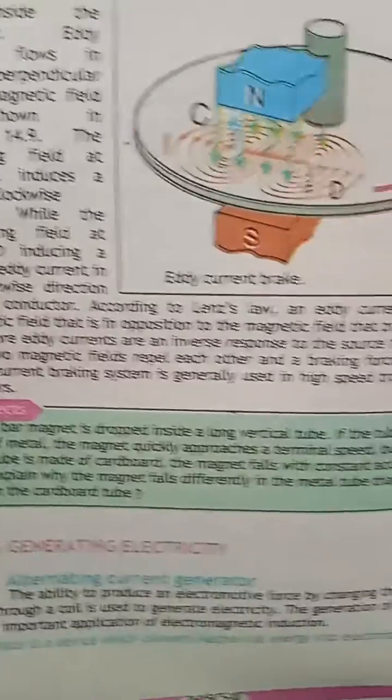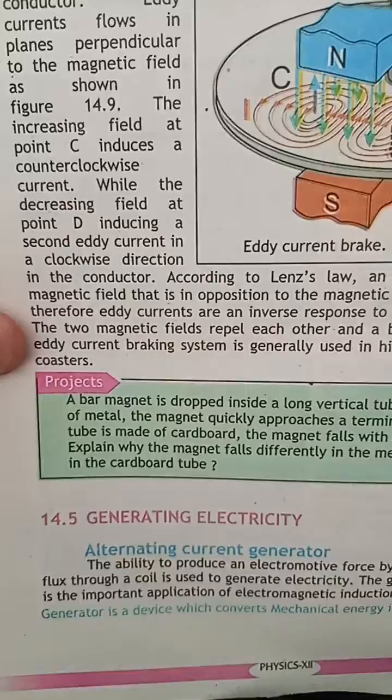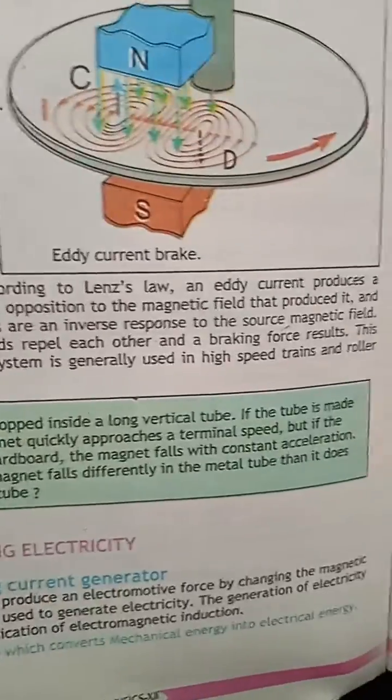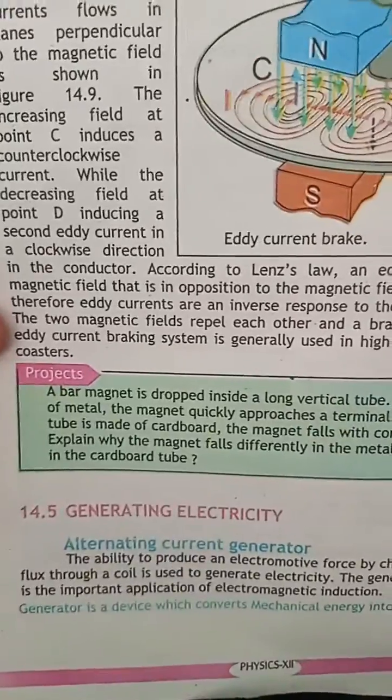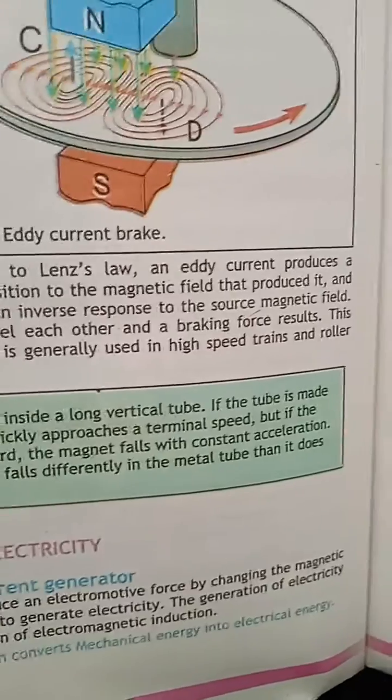The conductor's current produces a magnetic field that is opposite to the magnetic field that produces it. Therefore, it is in reverse response to the source magnetic field. The two magnetic fields are in reverse response to the source magnetic field.